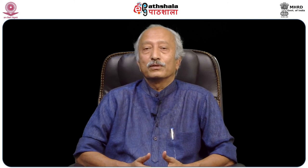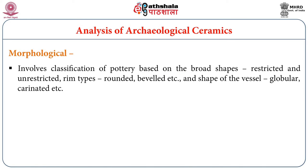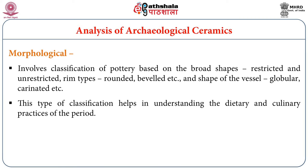Fabric analysis also helps in identifying the final stages of manufacturing and understanding the technology, choice of inclusions, firing conditions, and temperatures at which pots were heated. Morphology — referring to shape — involves classification of pottery based on broad shapes such as restricted and unrestricted forms, rim types such as rounded and beveled, and vessel shapes such as globular and carinated. This type of classification helps in understanding the dietary and culinary practices of the period.